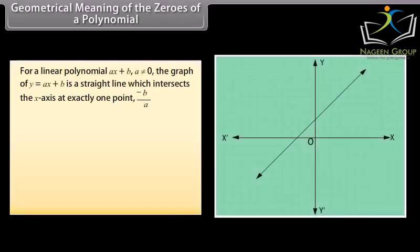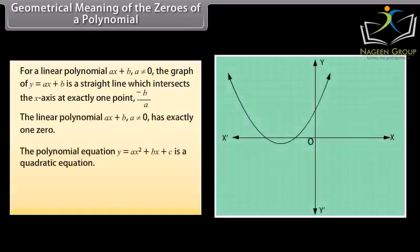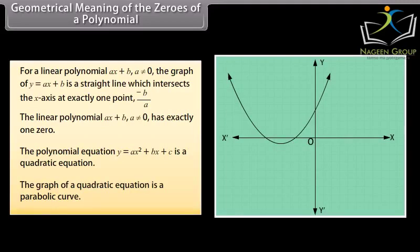Geometrical meaning of the zeros of a polynomial: For a linear polynomial ax plus b, where a is not equal to 0, the graph of y equal to ax plus b is a straight line which intersects the x-axis at exactly one point, minus b upon a. Therefore, the linear polynomial ax plus b has exactly one zero. The polynomial equation y equal to ax square plus bx plus c is a quadratic equation, and the graph of a quadratic equation is a parabolic curve.